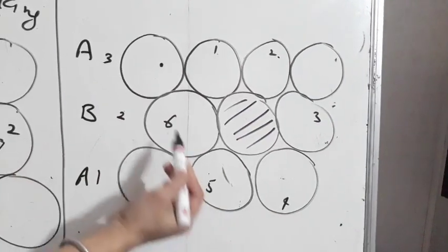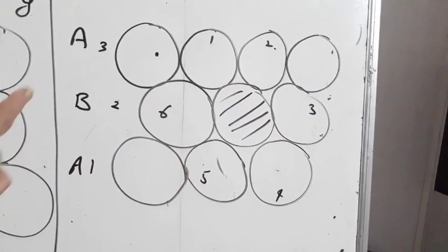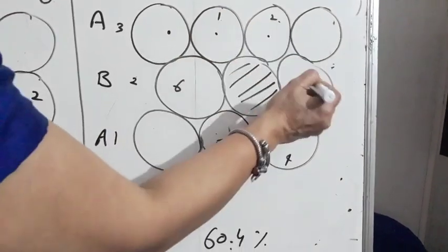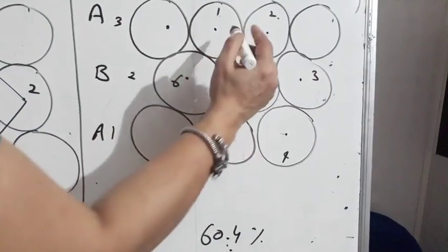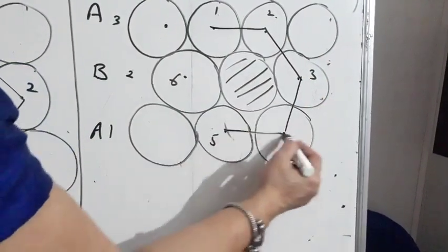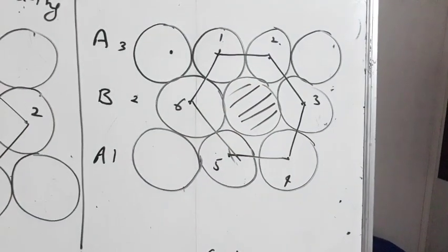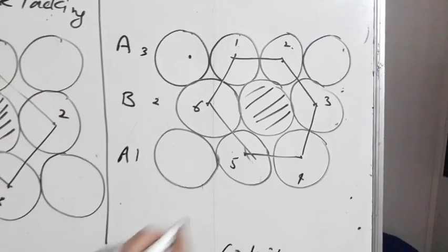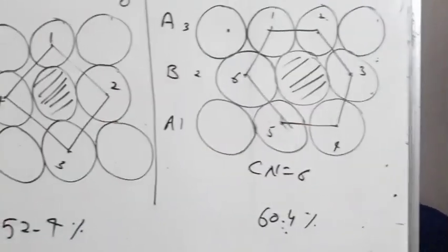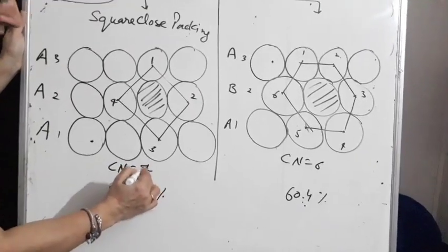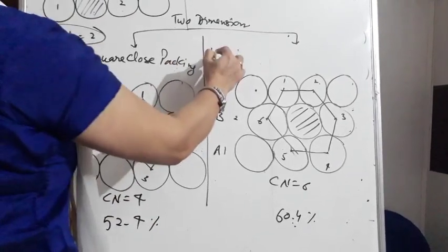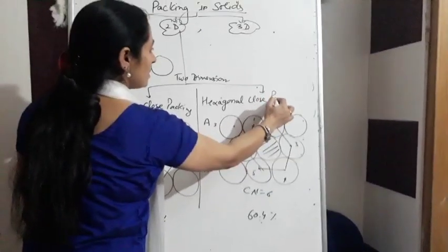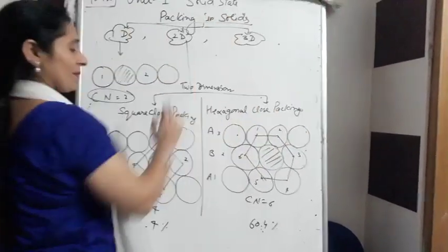The shaded sphere is in close touch with 6 nearest spheres. If we join their centers, a hexagon is formed — hexagon means 6. So the coordination number of this arrangement is 6, while that of square close packing is 4. This arrangement is called hexagonal close packing.